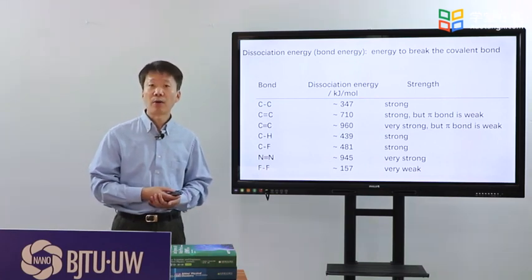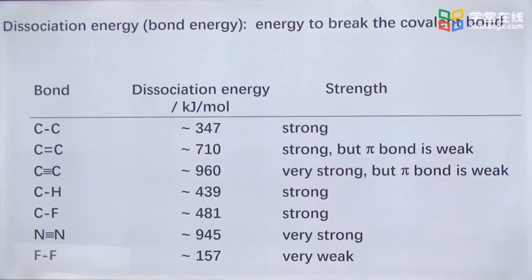Please notice that double bonding or triple bonding between two carbon atoms show very high dissociation energy values, but pi bonds inside are weak and can be broken easily.